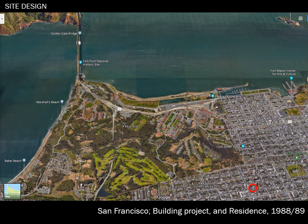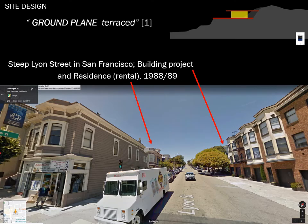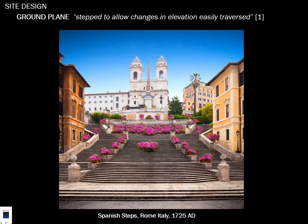This is San Francisco Bay — the yellow circle marks where I lived. You can see the terracing of the ground plane. The ground plane can step to allow changes in elevation to be easily traversed — like the Spanish Steps in Rome, a beautiful place. I've been to Italy six times. I avoided Rome until later, thinking it would be a big, noisy city, but it's absolutely beautiful — isolated into little neighborhoods and pockets of extreme beauty.